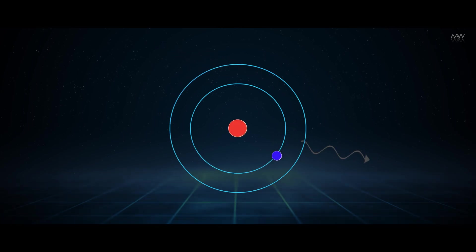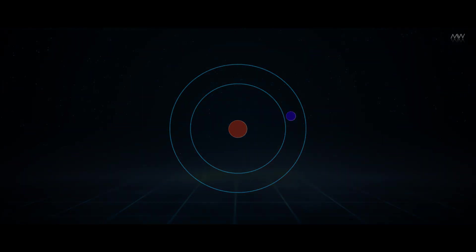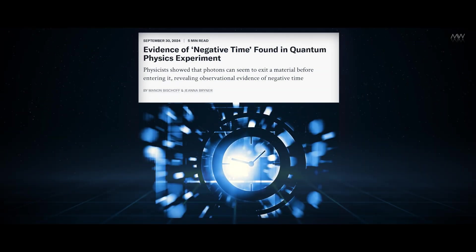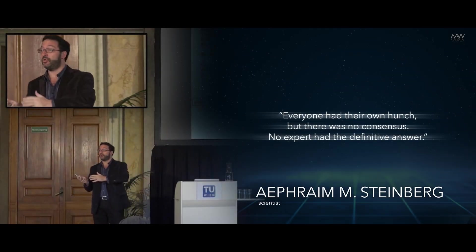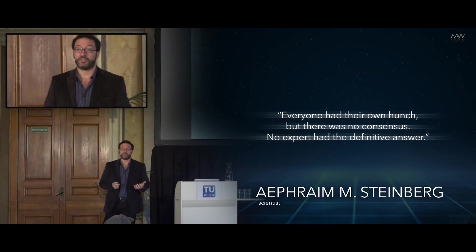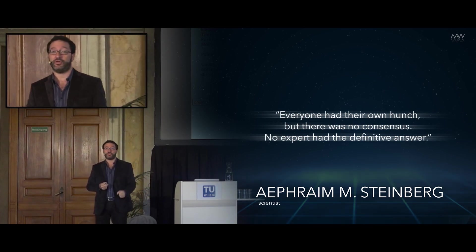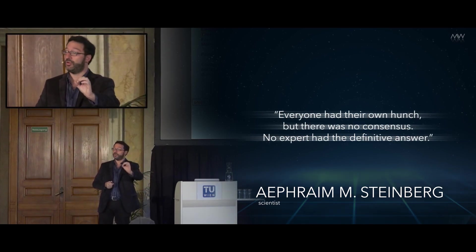The weirdness kicks in when you try to measure the group lag time - the time between a photon going in and a photon coming out. The team wanted to know, does this transit time depend on what actually happens to the photon inside the atomic cloud? Was it absorbed and re-emitted? Did it just pass through without interaction, or something in between? Sounds straightforward? That's what they thought too, until they asked around. Everyone had their own hunch, Steinberg recalls, but there was no consensus. No expert had the definitive answer. That meant only one thing: build the experiment.